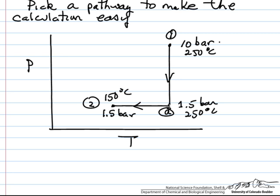So point 1, our starting point, 10 bar and 250C, we are first going to make a change at constant temperature. We'll go from 10 bar to 1.5 bar. At constant temperature, because it's an ideal gas, delta H is going to be 0 for this step.